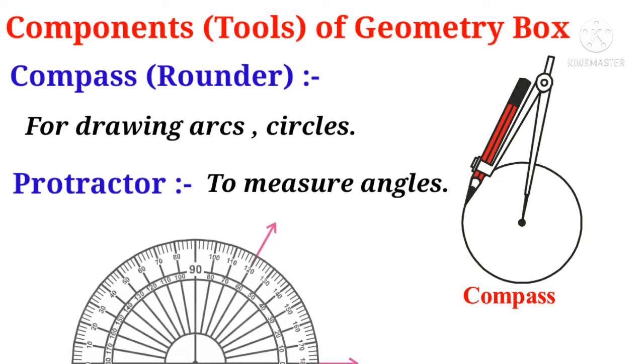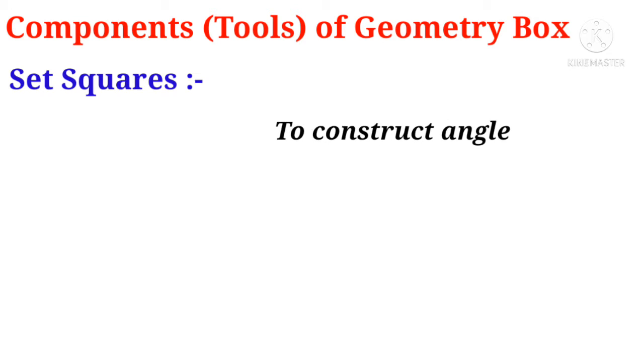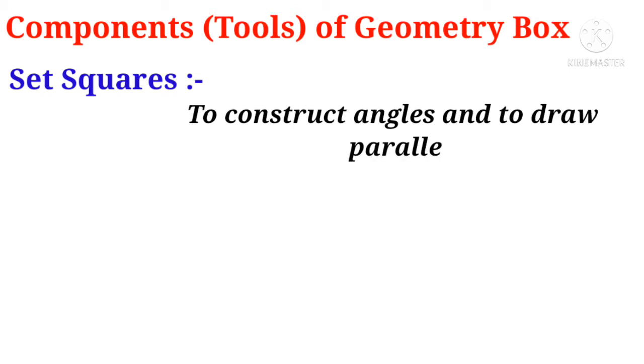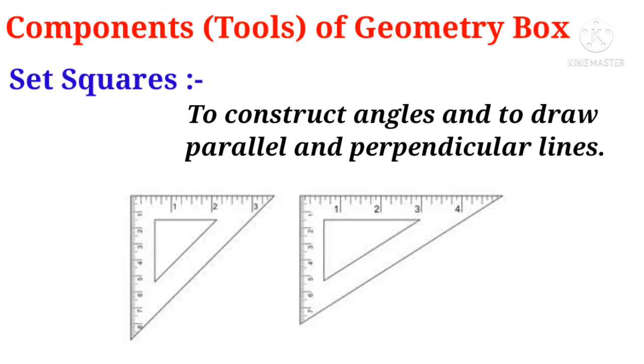Next, set squares. It is used to construct angles and to draw parallel and perpendicular lines. See the picture of set squares. There are two. So these are the main tools of geometric box which are used in practical geometry.